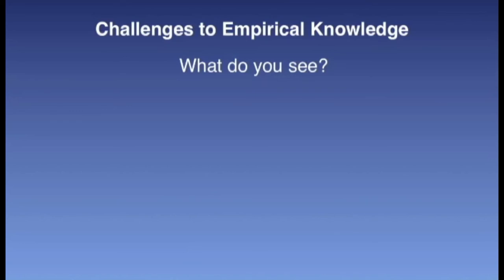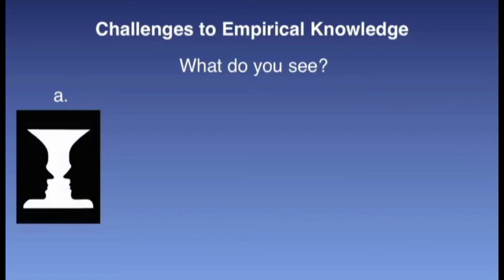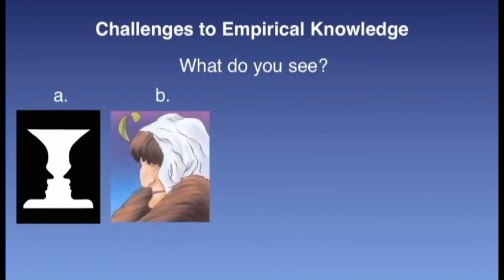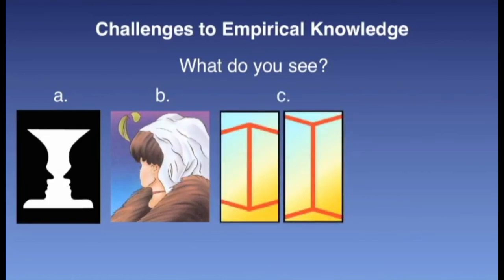Graphic A is a graphic that shows either a vase or two faces, depending on how you actually look at it. Graphic B shows either a beautiful young lady facing away from the screen, or a profile of an old lady with a scarf over her head. Another graphic indicates two different vertical lines, and the question is which is the longer of the two — the answer is they are both the same length. However, our sense of vision is being fooled because of the distractors placed at the ends of the lines themselves. And finally, diagram D asks what is wrong with this particular diagram.